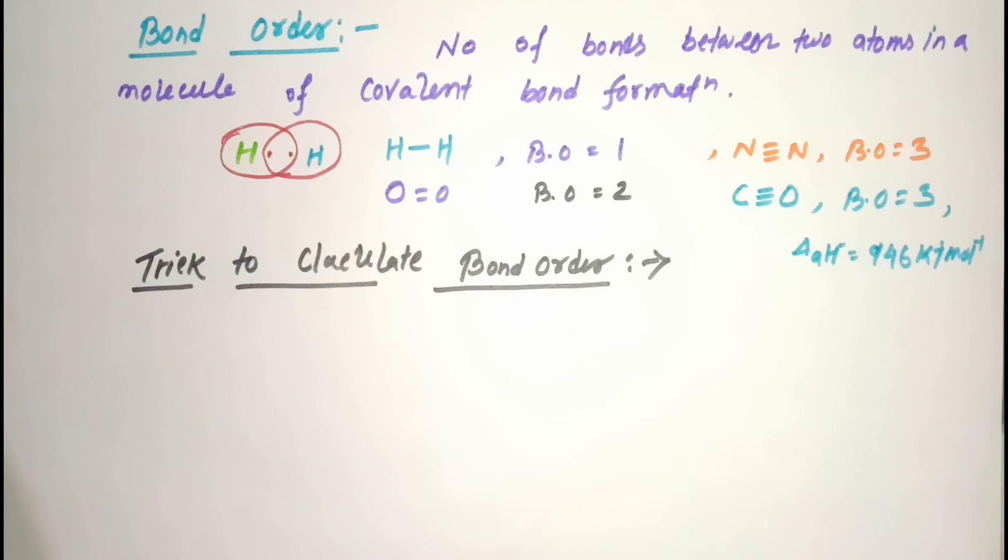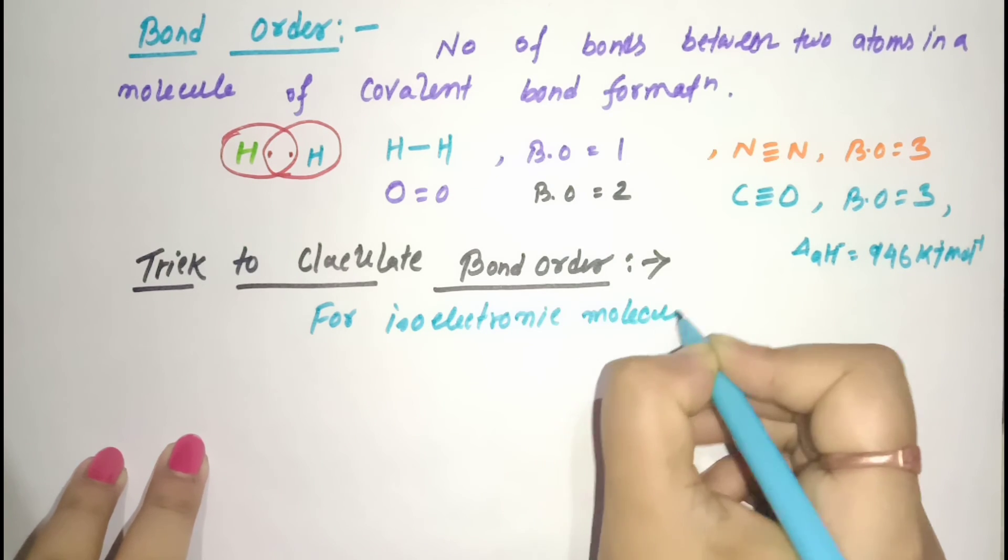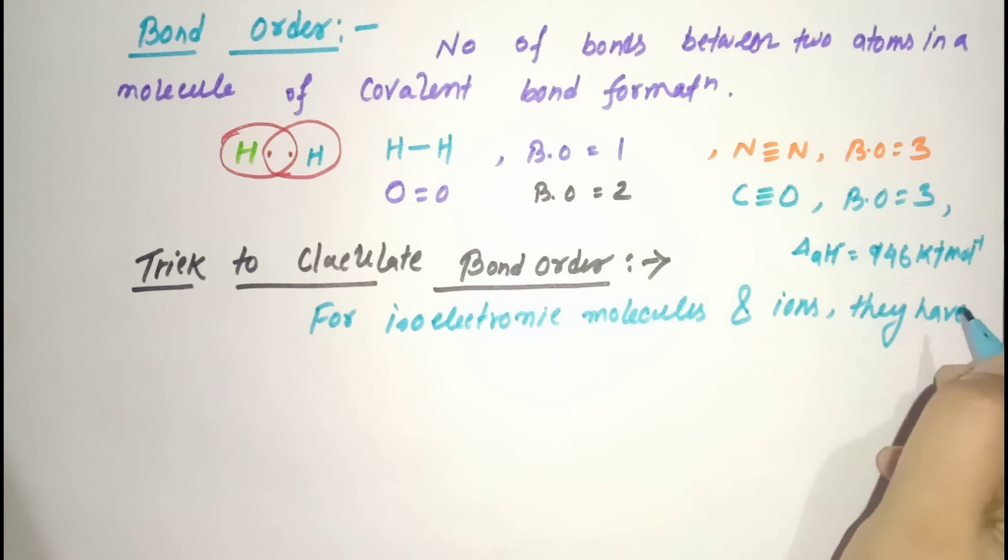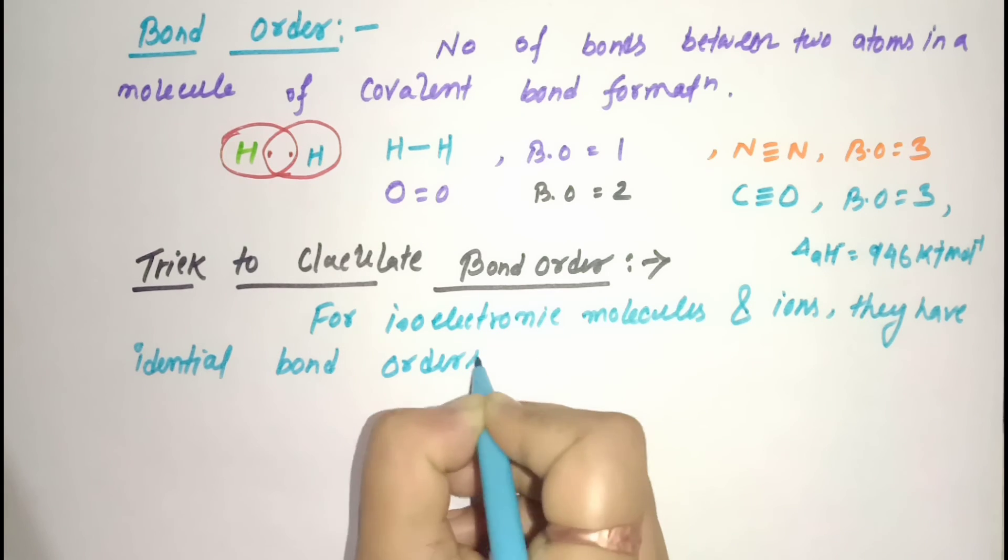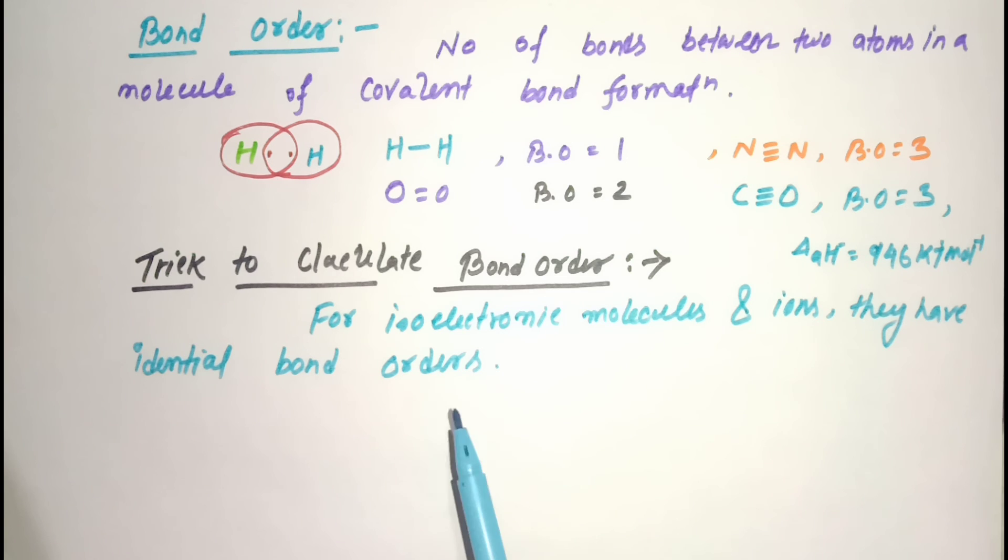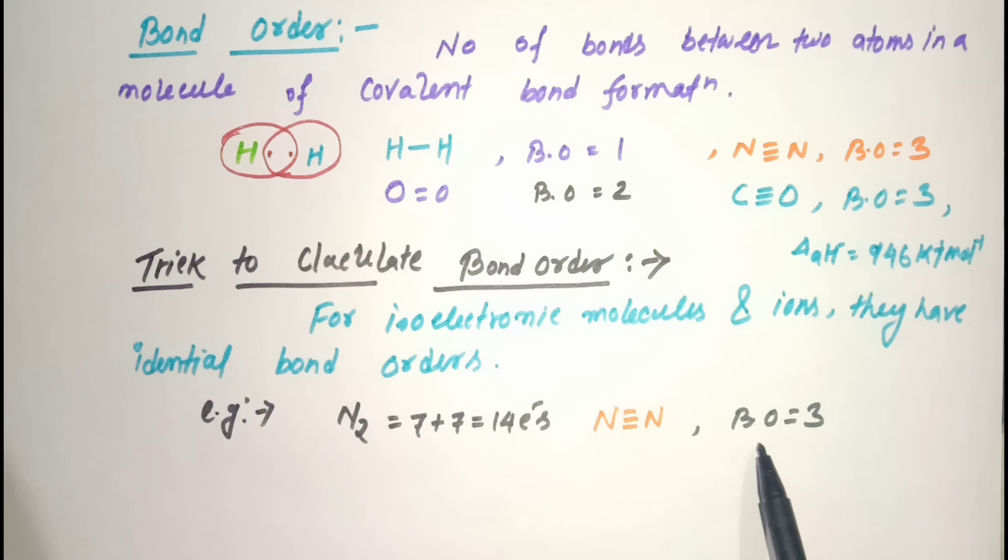Now see the trick to calculate bond order. For isoelectronic molecules and ions, they have identical bond orders. Isoelectronic means iso=same and electronic=electron. Molecules with the same number of electrons have the same bond order. For example, in case of nitrogen N2, if we count electrons: nitrogen has 7 electrons per atom, so two atoms have 7 plus 7 equals 14 electrons total. Nitrogen forms a triple bond, so it has bond order 3.